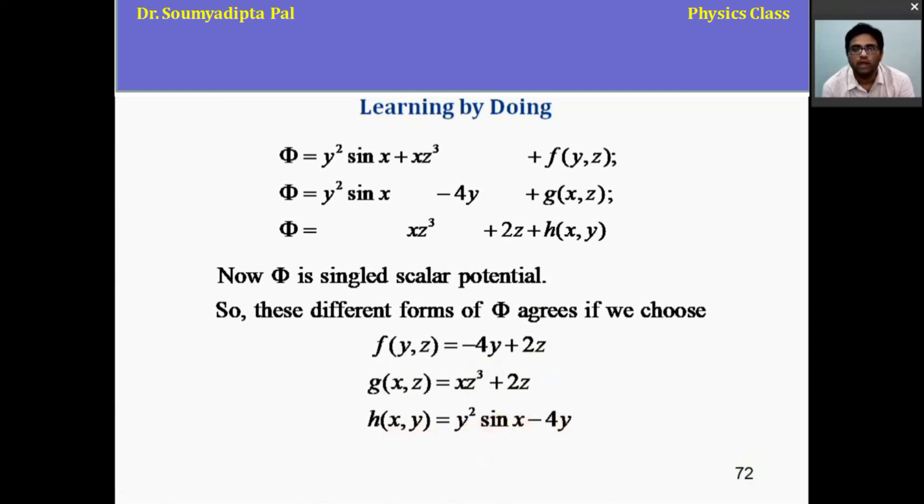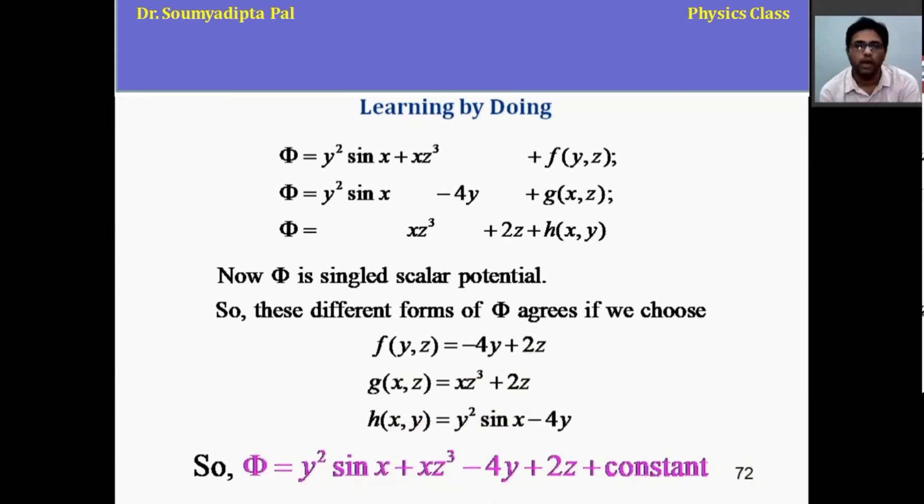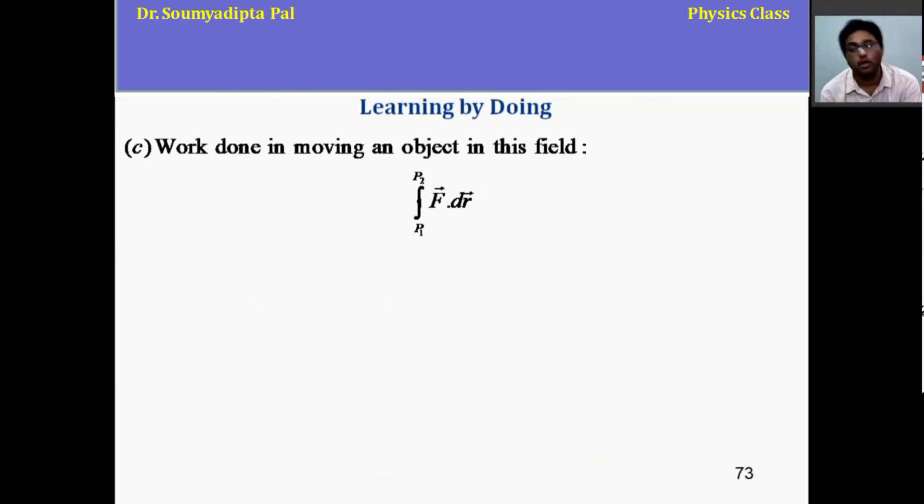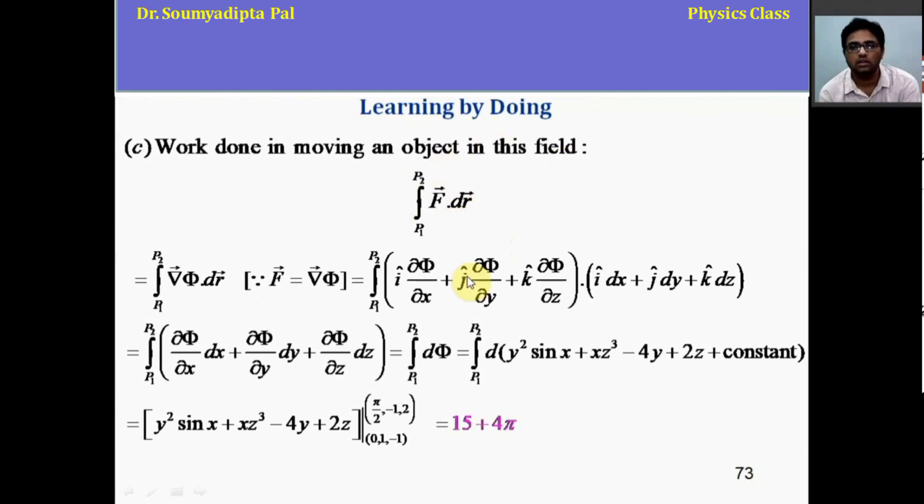So, final form of phi will be y square sin x plus x z cube minus 4 y plus 2 z and one integration constant that is arbitrary. To find out the work done in moving an object in the field f from a point p1 to p2, we have to perform this integration. Now, as the force field is conservative in nature, we can put gradient of phi in place of the force field f. And we get integration p1 to p2 del phi del x dx plus del phi del y dy plus del phi del z dz. And this term is actually d phi, which is called differential of phi.